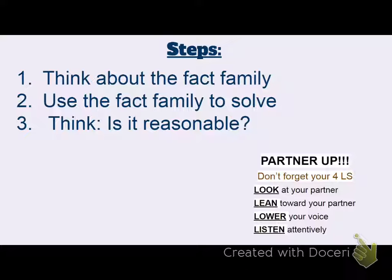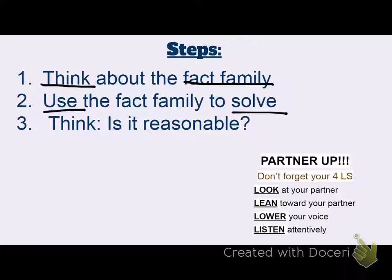As we look at problems today relating division to multiplication, I want you to think about these steps. Step number one: think about the fact family — think about how the numbers are related, whether through multiplication or division. Step two: use the family to solve. And finally, that last step: is it reasonable? Whatever you get for your answer, does it make sense? So one, think about the fact family and all the numbers in that family; then use those numbers to solve the problem; and go back and think, does it make sense?